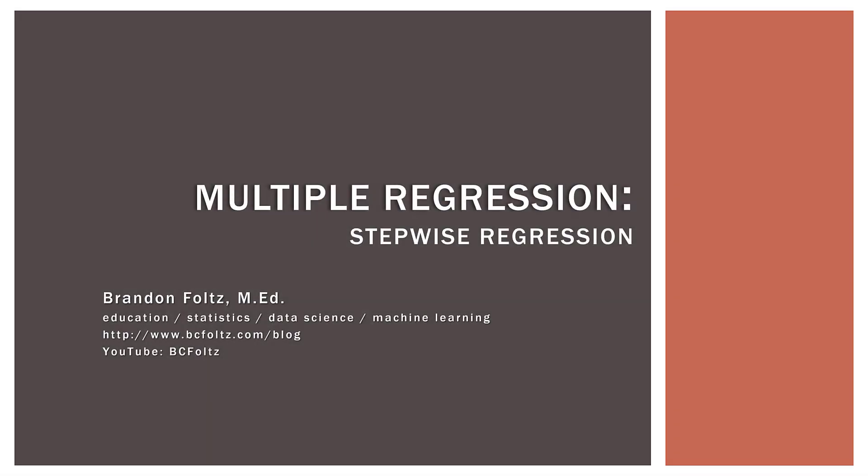This video is the next in our series where we're learning about regression model building techniques. Up to this point, we have learned about forward selection and backward elimination. Now, luckily, stepwise is just the combination of the two. So if you understand forward and backward, you are 90% of the way there to understanding stepwise. Because of that, we're going to make this video short, high level, and conceptual, because you probably have most of the info you already need.